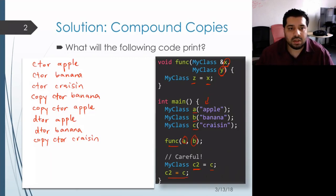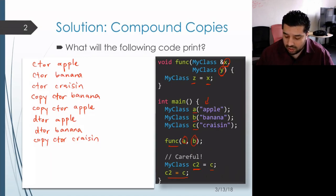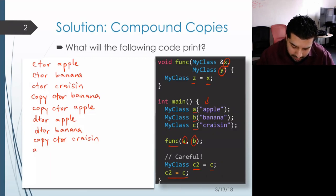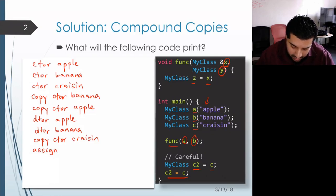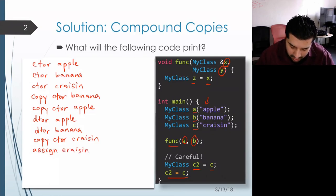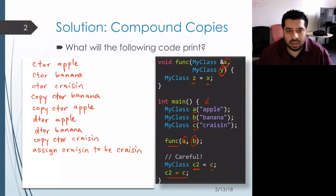On the next line we actually have an assignment, because the left-hand side object already exists and already has a value — what we're doing is changing the value stored inside of it. So we get a call to the assignment operator, and the old value was 'crazen' and the new value also happens to be 'crazen', so we'll write out both of those.